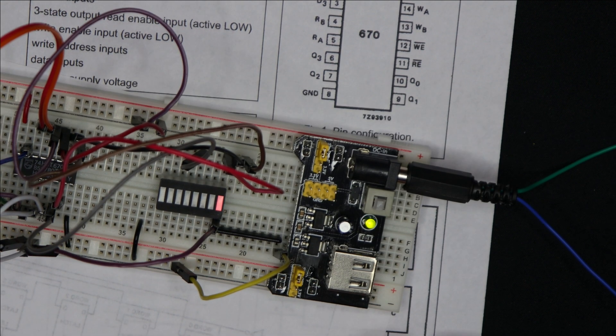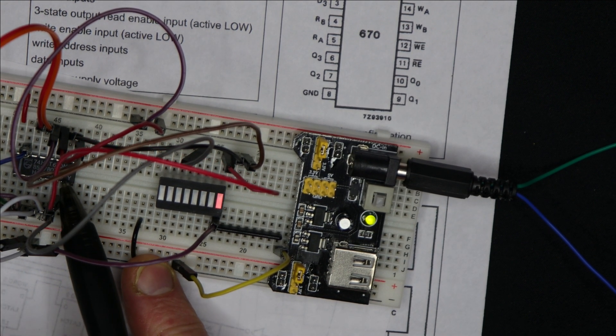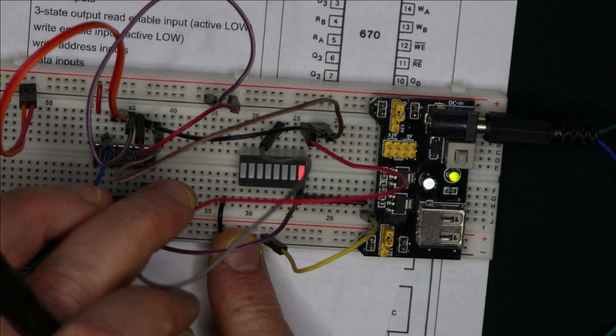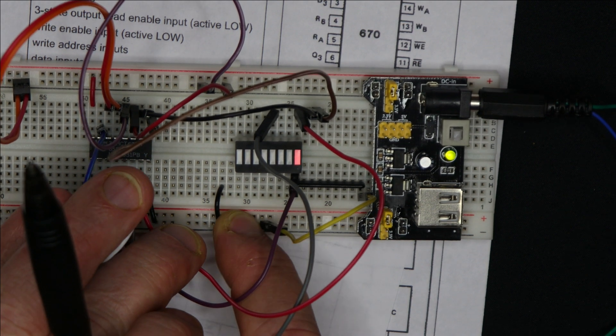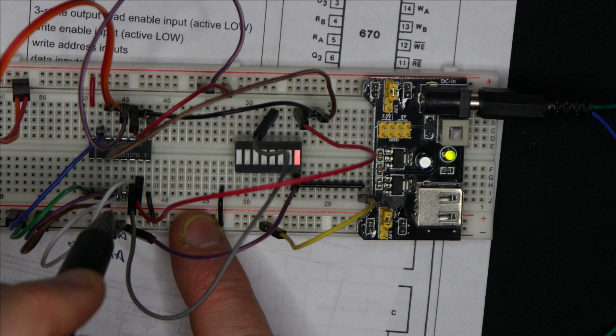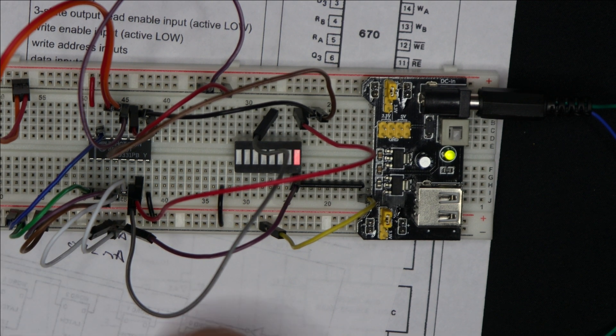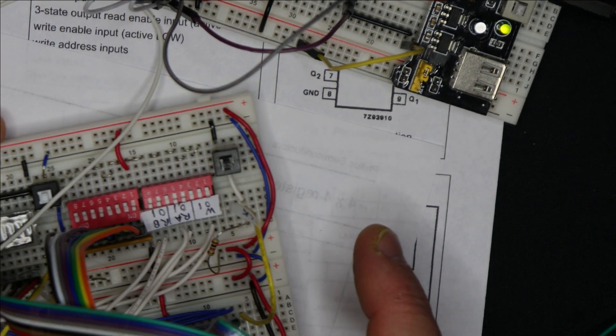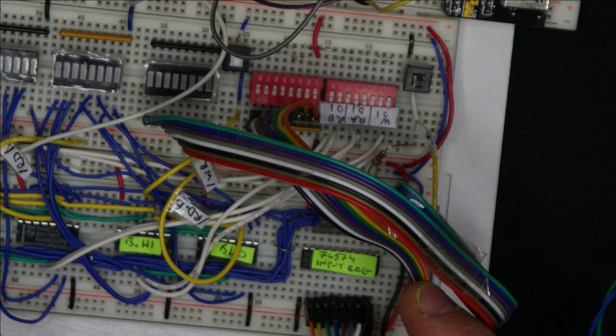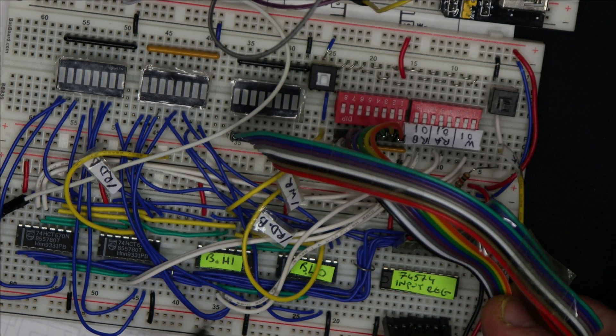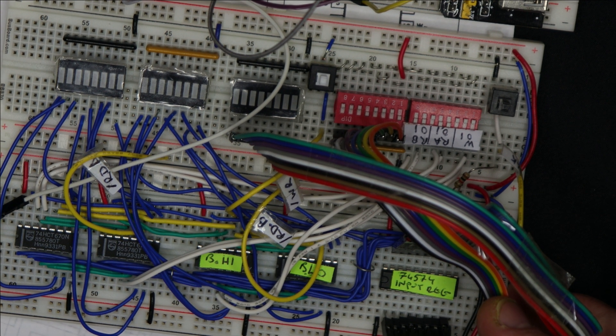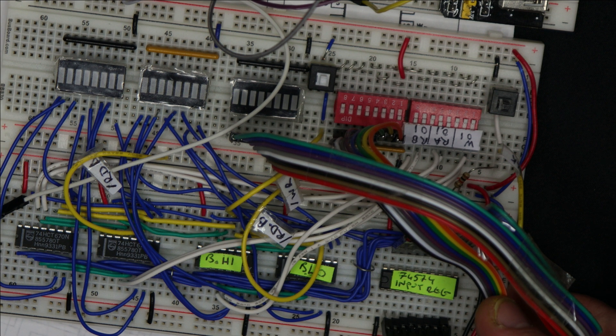The 74HCT670 buried in there amongst that rat's nest of wires. I'm using four of those and yeah, they seem to be working pretty well. I'll do another video about how I've actually used them here in the register file. There's a little bit of complexity in how this is wired up. Four of them, as I say, for a triple port, four by eight bit register file.